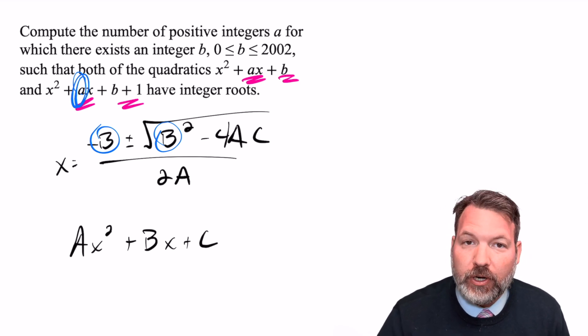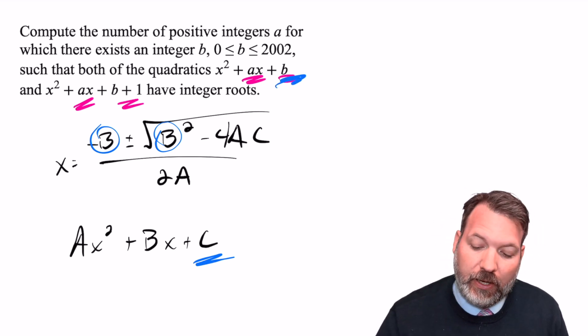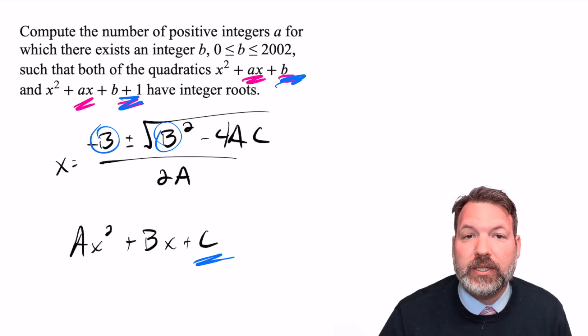So in fact, the B of our quadratic formula is going to match the A of this particular problem. It's the coefficient of the linear term. The C is going to match the constant term, which again, a little bit confusingly in our problem is actually represented by B or B + 1.